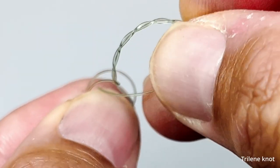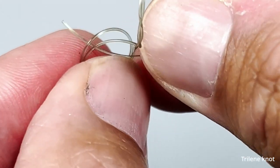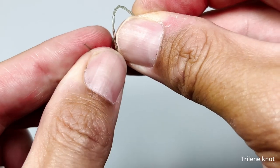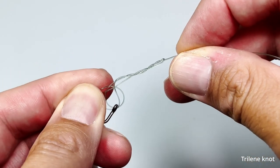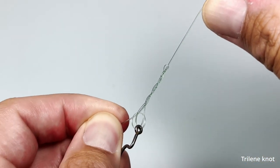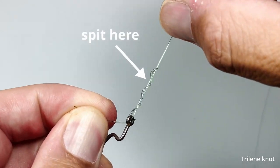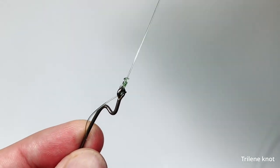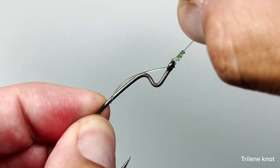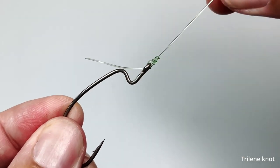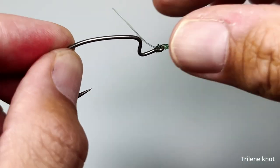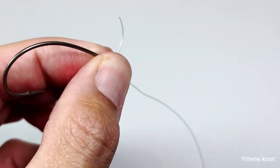You then push the tag end through the loop and cinch the knot. Wetting the knot with spit makes it cinch down easier. Then you trim the tag end and you're done.